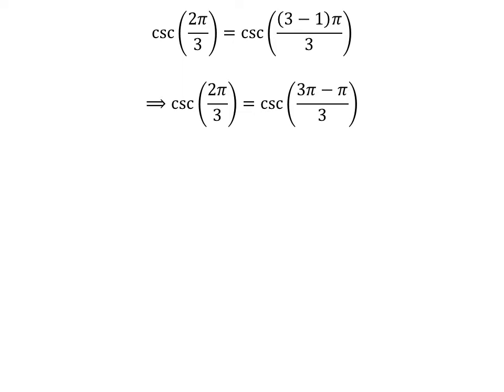Expanding the numerator, we get cosecant of 2 times pi upon 3 is equal to cosecant of 3 times pi minus pi upon 3.